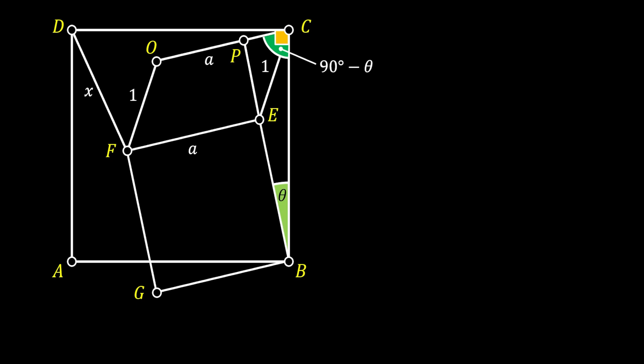Alright, so now let's continue with our construction. We will now pull a line from the point O to the point D, and in this way we will form this nice triangle DCO. And let's also have a look at the triangle BCE. Let's try to prove that those two triangles are congruent.